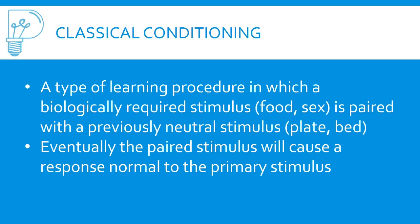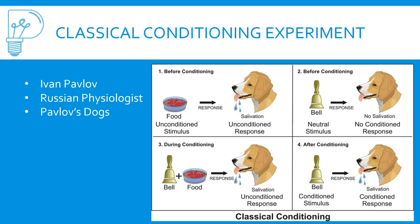On to conditioning. There are two types of conditioning. The first one is classical conditioning, which is a type of learning procedure in which a biologically required stimulus — such as food or sex — is paired with a previously neutral stimulus, something like a plate or a bed.